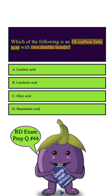So how about B? Linolenic acid is also an 18-carbon fatty acid, but it has three double bonds. So we can safely eliminate this answer choice.